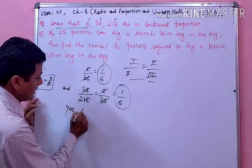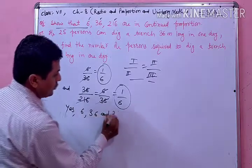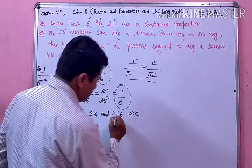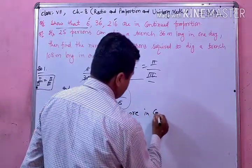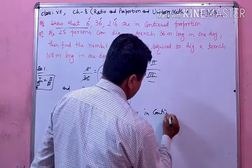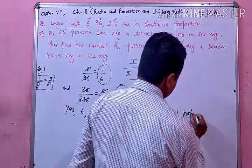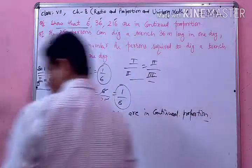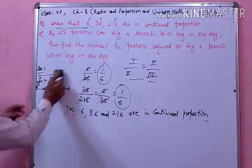तो अब यहां हम लिख सकते हैं: 6, 36 and 216 are in continued proportion. ठीक है, इस तरह से हमें यह check करना होता है। अब देखिए इसके बाद question number 7.